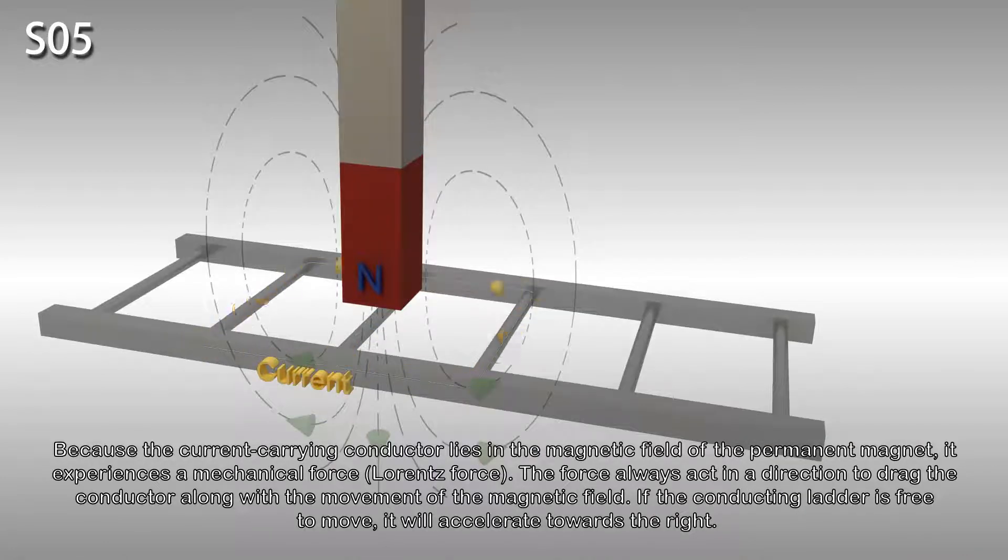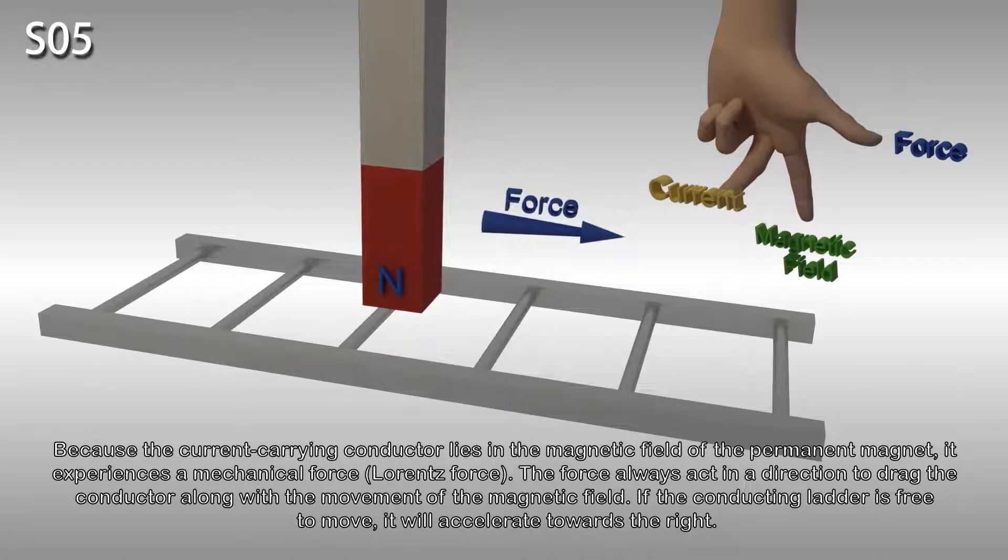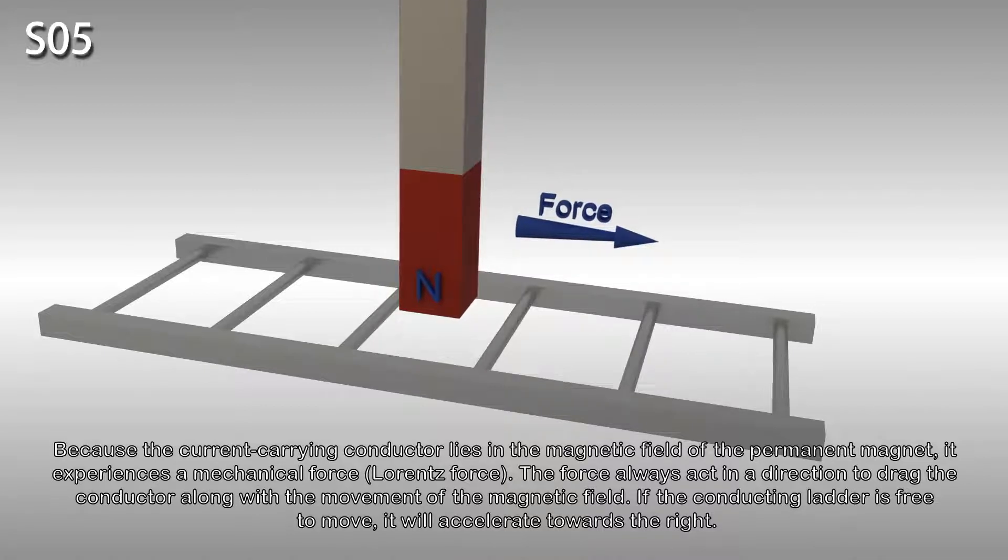Because the current-carrying conductor lies in the magnetic field of the permanent magnet, it experiences a mechanical force known as the Lorentz force. The force always acts in a direction to drag the conductor along with the movement of the magnetic field. If the conducting ladder is free to move, it will accelerate towards the right.